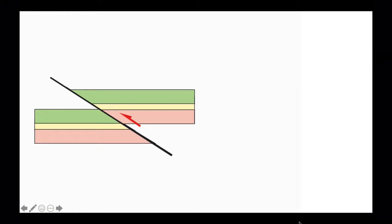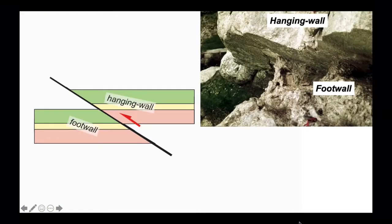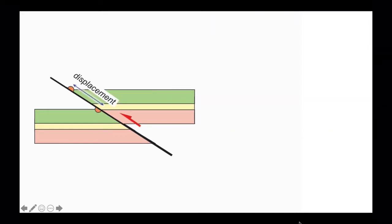Here's a simple cartoon. The rocks above the fault are called the hanging wall, the rocks below the fault are called the foot wall. By recognizing the offset of the marker between foot wall and hanging wall we can measure the displacement, the amount of movement measured along the fault plane.